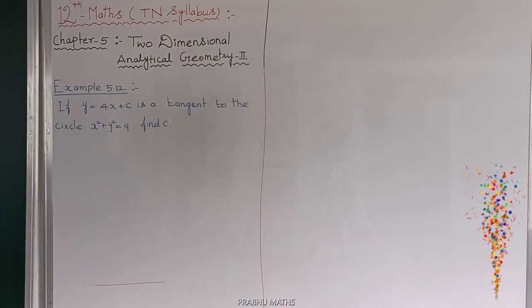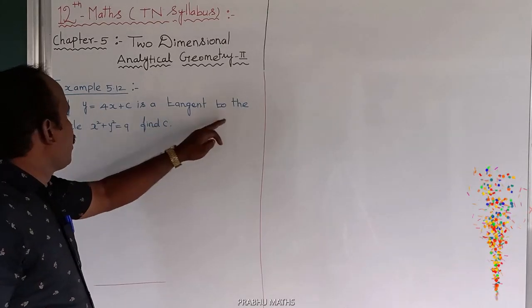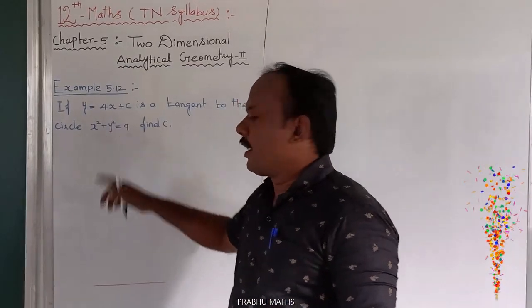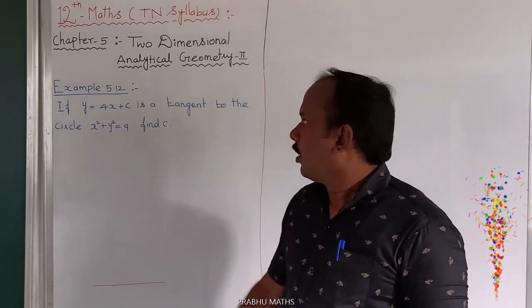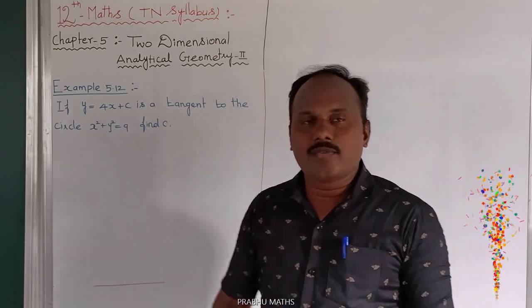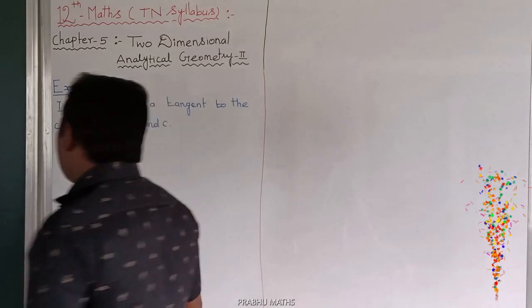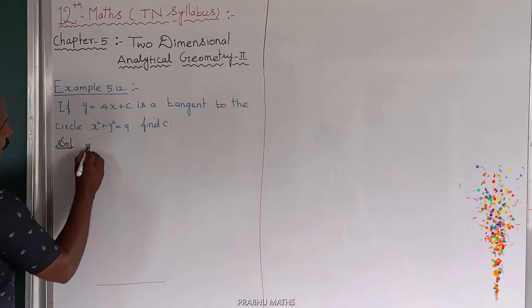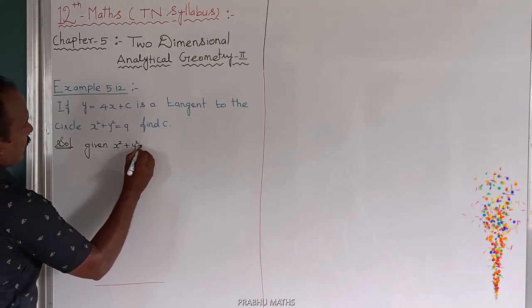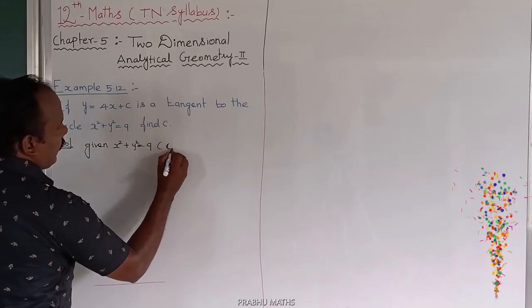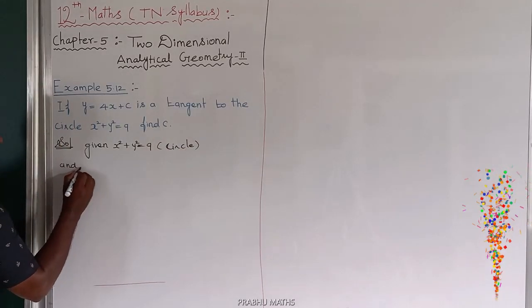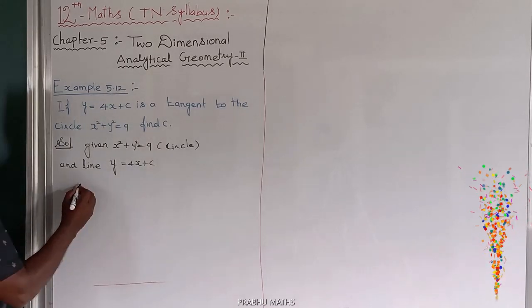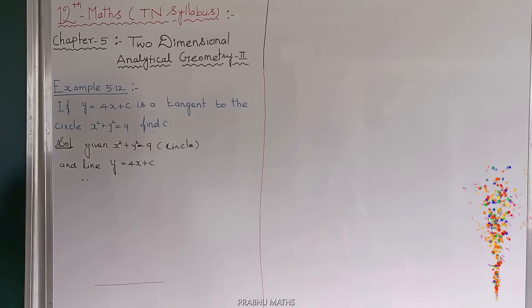Example 5.12: If y is equal to 4x plus c is a tangent to the circle x squared plus y squared equals 9, find the value of c. This is the straight line and this is the circle. The tangent equation of a circle at the point x1, y1 — that is the condition of c squared equals a times root of 1 plus m squared. That is the condition for a tangent circle and a straight line.